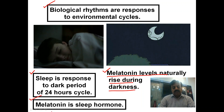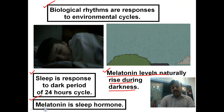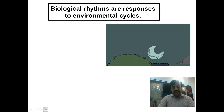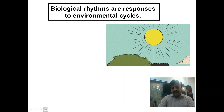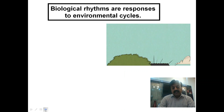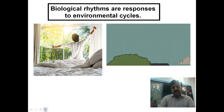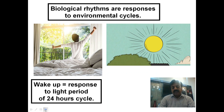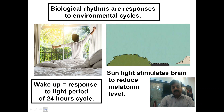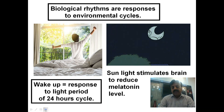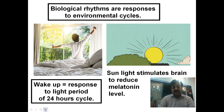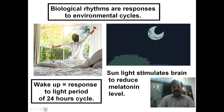Melatonin is a sleep hormone. When night comes, melatonin hormone levels rise in the body, making us sleepy. But when daytime comes and sunlight returns, sunlight inhibits melatonin. Then melatonin drops in the body and we wake up. So sunlight is a wake-up call. Wake up is the response to the light period of the 24-hour cycle. Sunlight stimulates the brain to reduce melatonin levels; when melatonin drops, sleep goes away and we wake up.